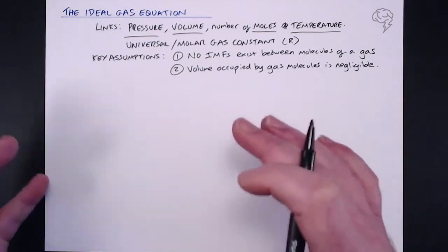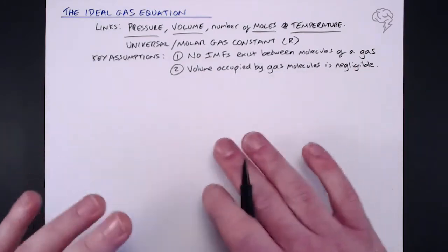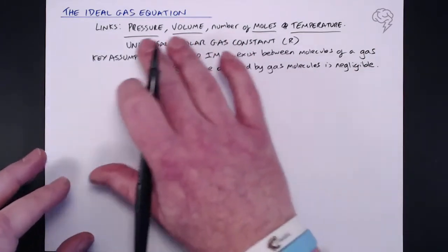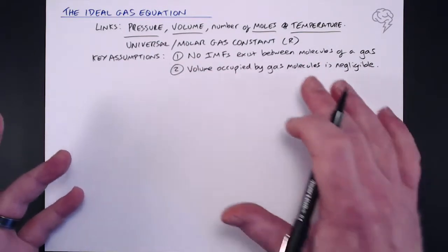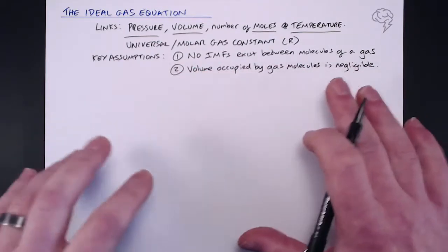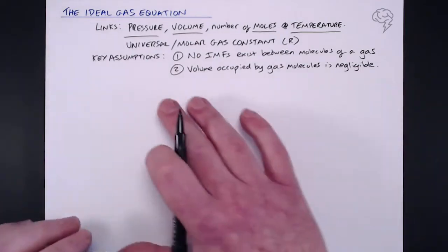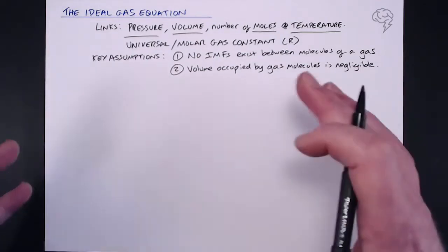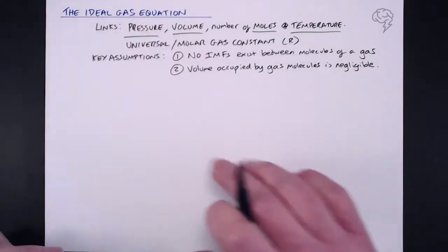That's why we're making these key assumptions here. Now, there are some other assumptions involved in this, but that's way above our pay grade at A level. But it is good to know why it's called the ideal gas equation, because gases don't behave ideally. We're assuming that they do for the purposes of this equation.